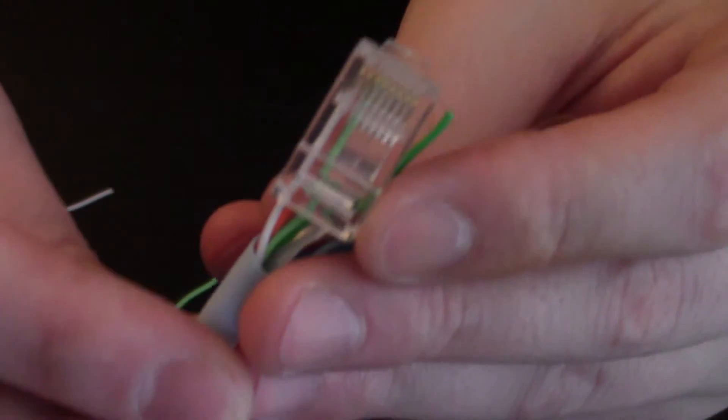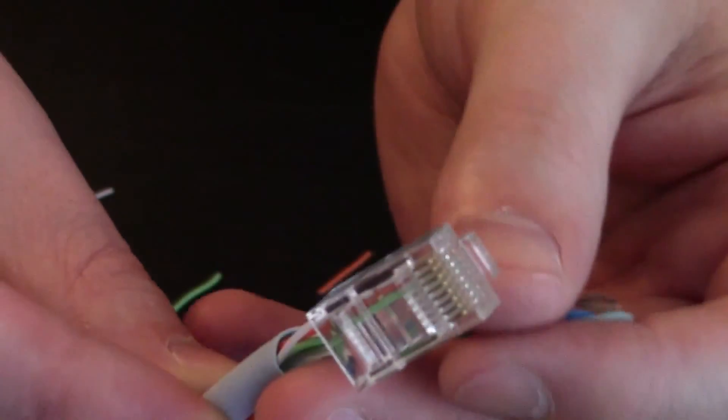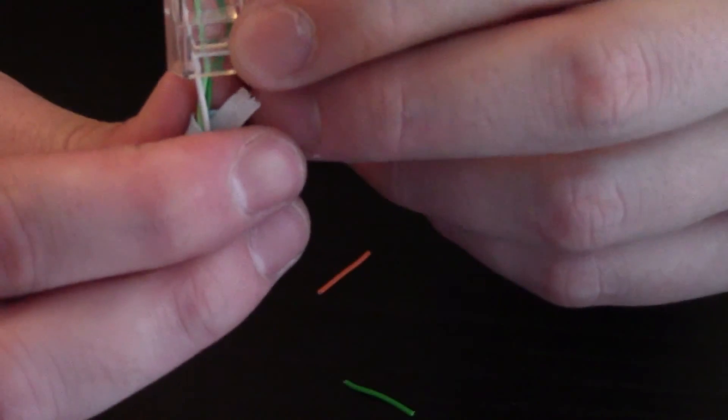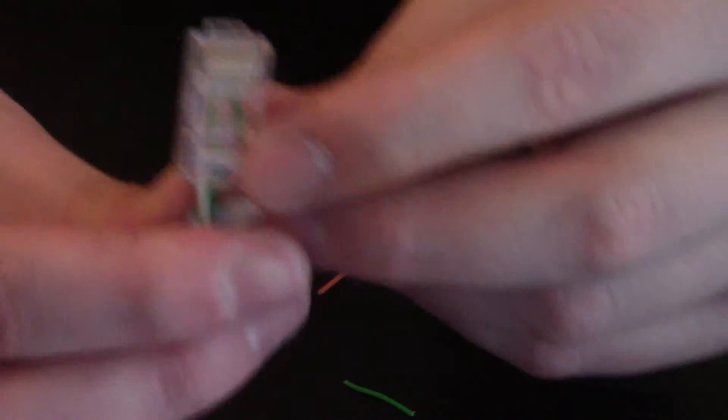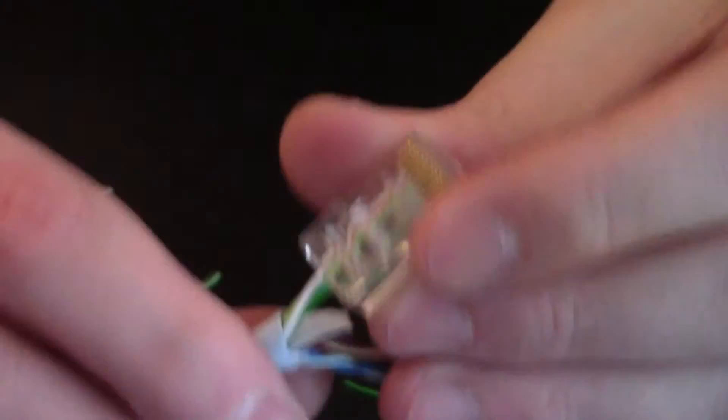So now we have the three cables in and we do need to skip two spots and get the fourth one in. Just have to make sure that those are going up all the way before we crimp them. So now you can see it may not be straight but it is in there.